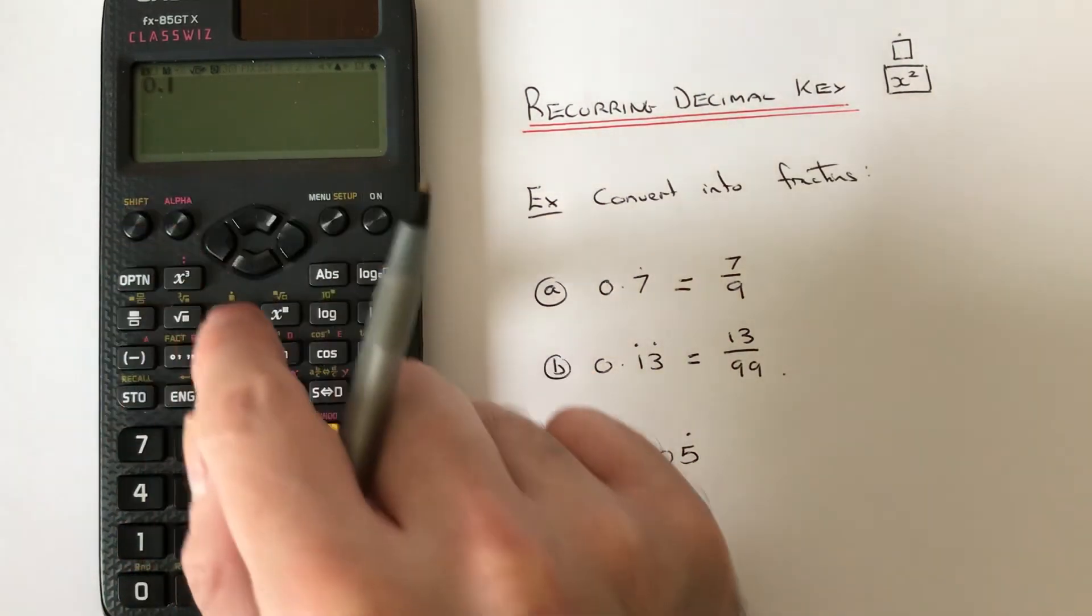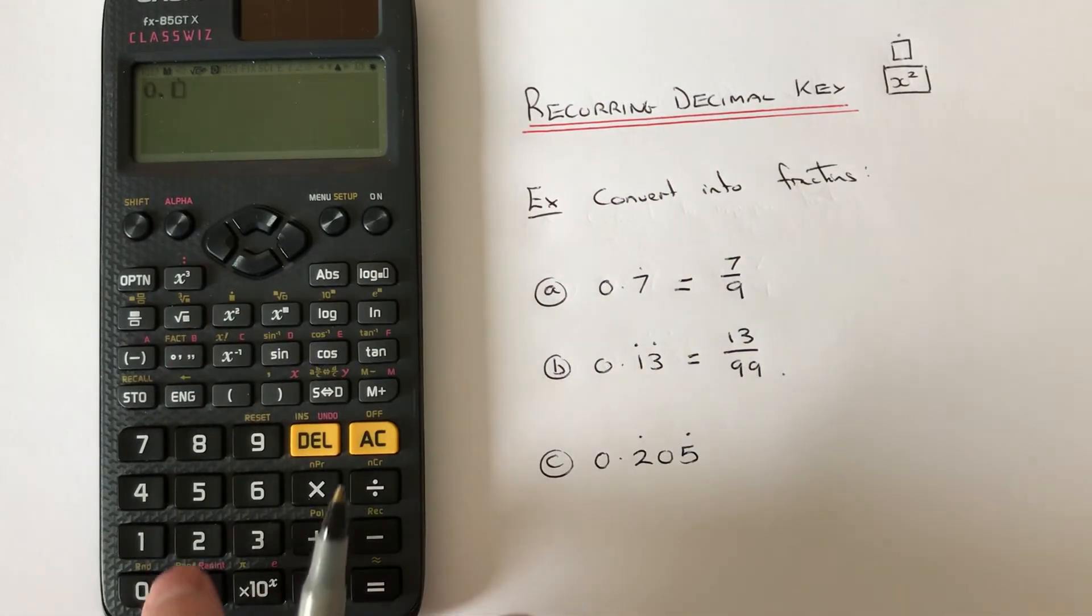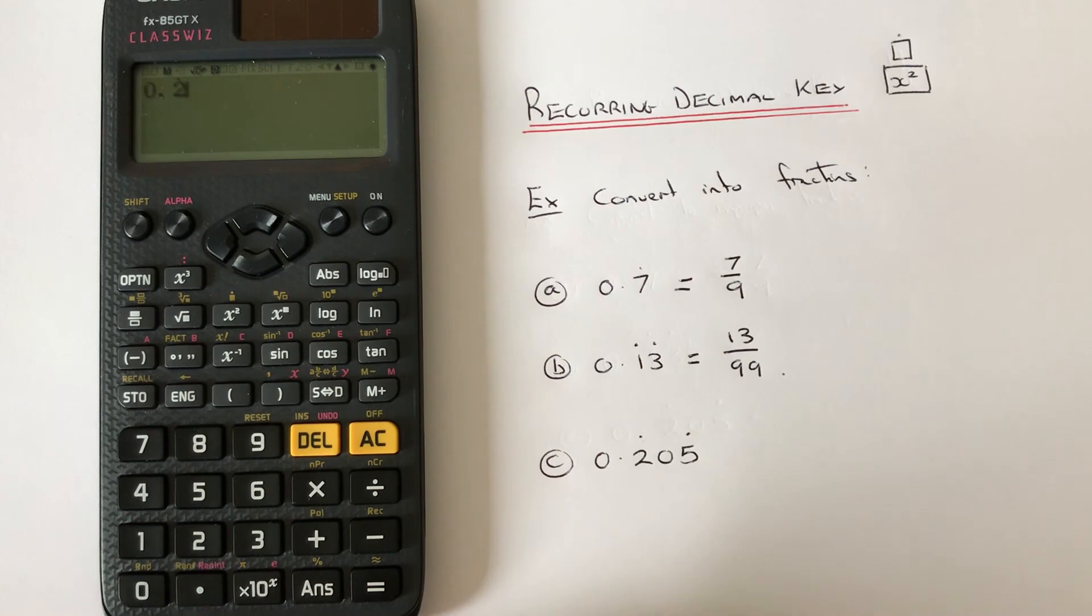Then press the 5 because we want a recurring decimal on that one.